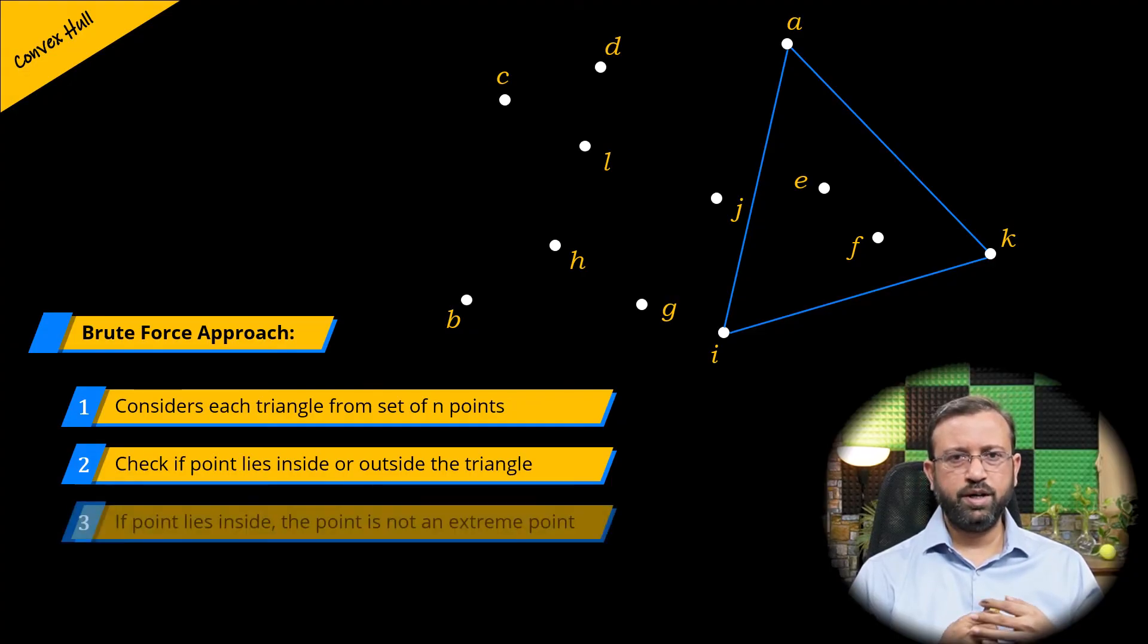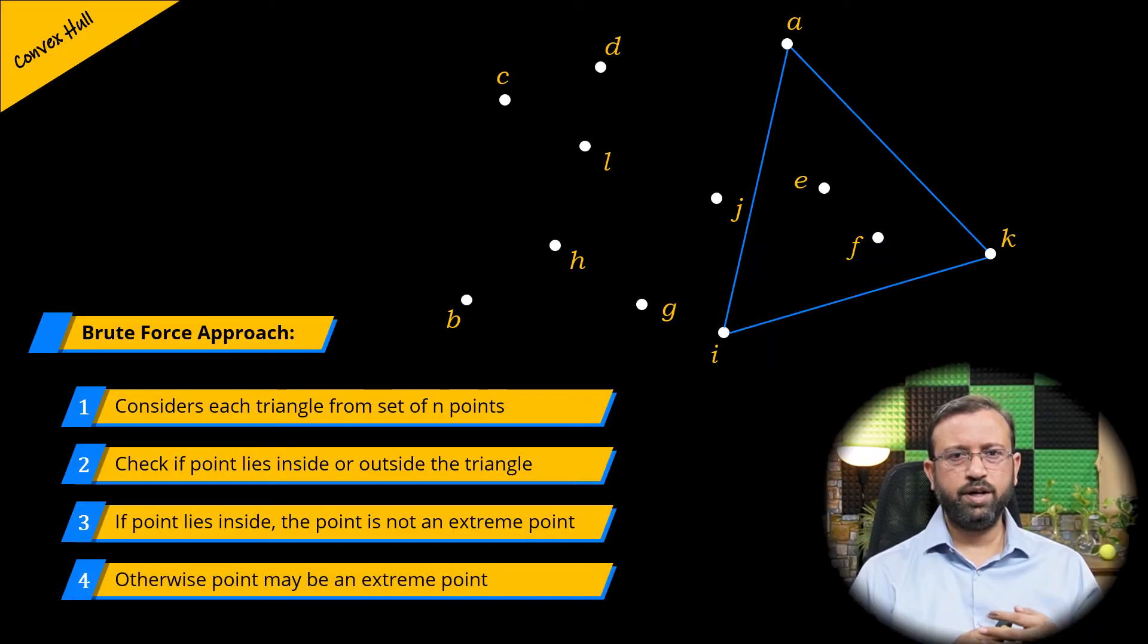Then check if a point lies within the triangle or outside the triangle. If the point is within the triangle, then the point is not an extreme point. But if the point is outside the triangle, then the point can be considered as an extreme point. This process is repeated for all n points and finally we get the convex hull.